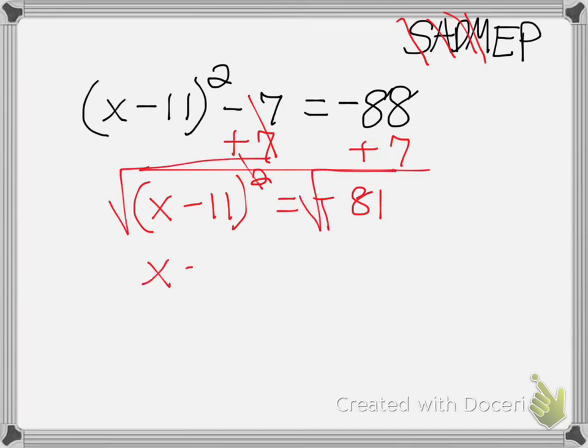So I'll bring down my x minus 11. But then, if you look over here, we're taking the square root of negative 81. Now remember, anytime you're taking the square root of a negative number, you have to take out i first. So let me go over to the side and show you what I'm talking about.